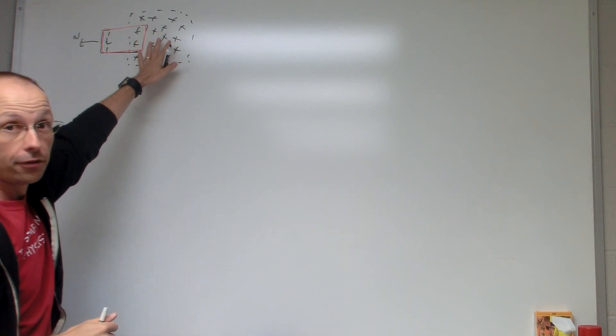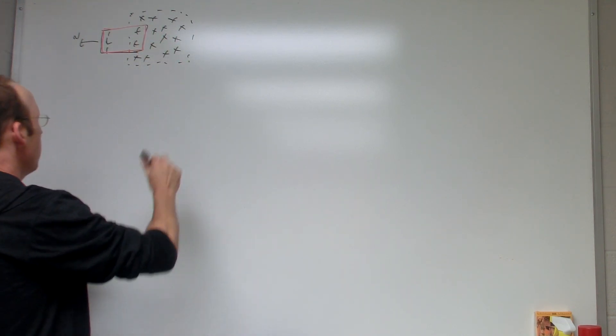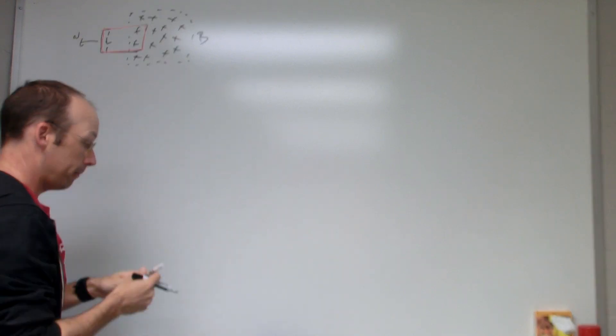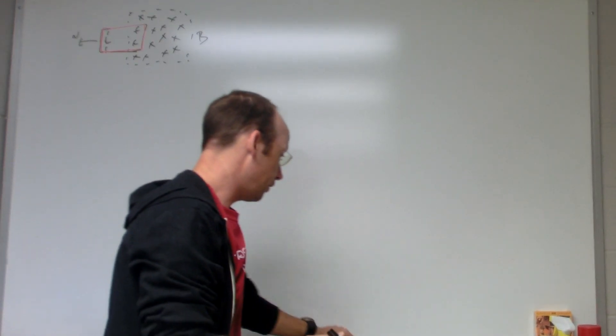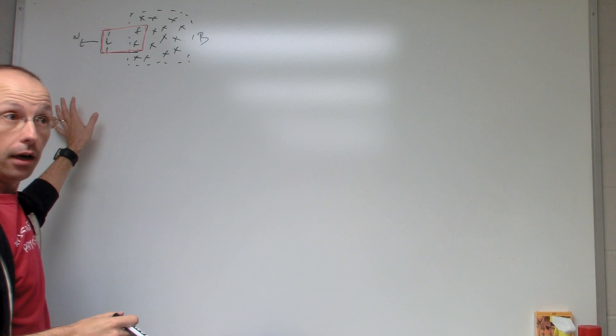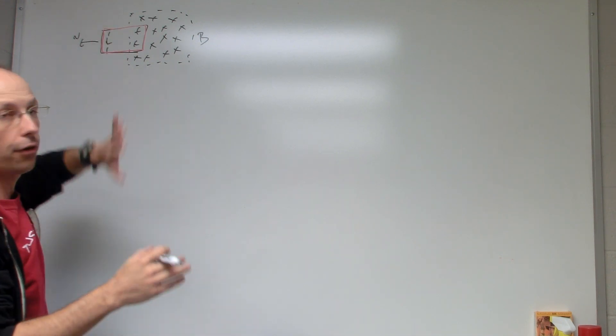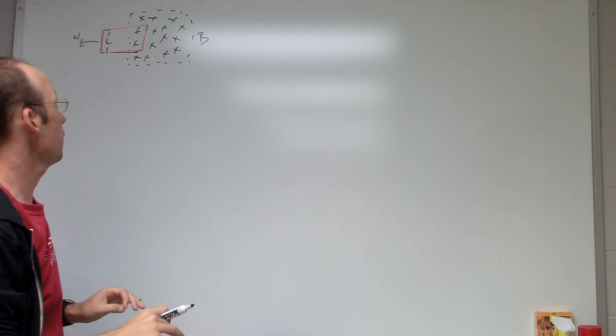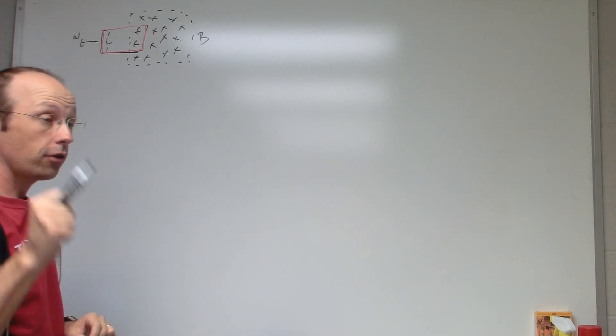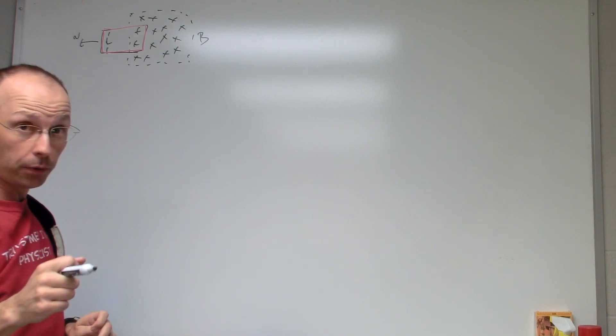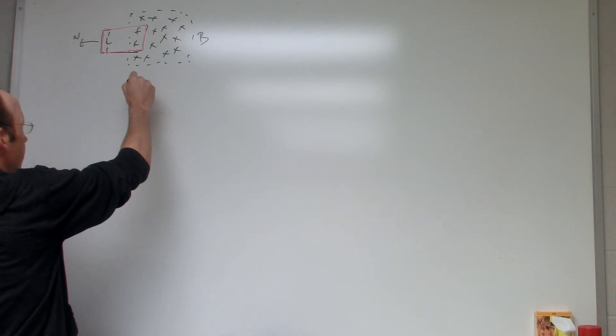I'm pulling it with velocity V that way, and in this region there's a constant magnetic field going into the board with value B. So the question is, what's the EMF in the circuit? You can have a resistor over there if you want. Let's just calculate the EMF.